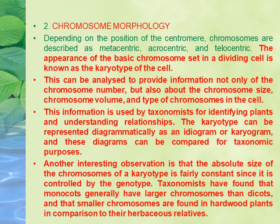Chromosome morphology — the outside shape of chromosomes — is studied through a photograph called a karyotype. We take photos of chromosomes from the same cell, compare them, and look for similarities. Some generalizations have been made: monocots have larger chromosomes, dicots probably have smaller ones, and hardwood trees have small chromosomes while herbs have bigger chromosomes. From the karyotype photos, we can decide the type of plant.